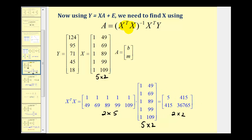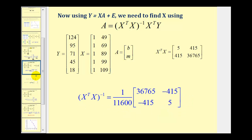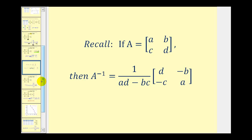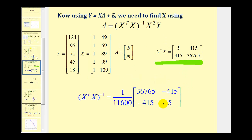For the next step, we find the inverse of that product. Because this product is a two-by-two matrix, we can use the standard shortcut formula to find its inverse, which I've already done here.